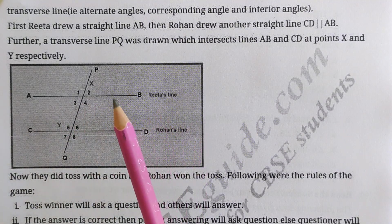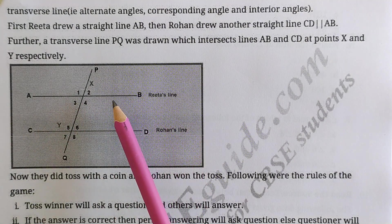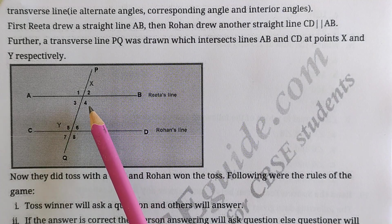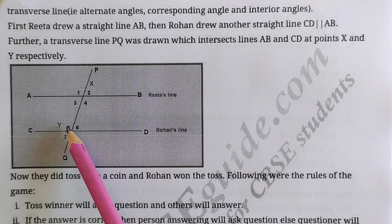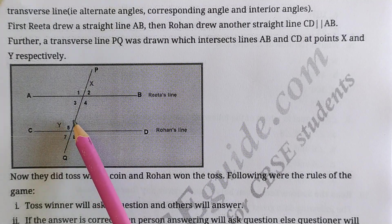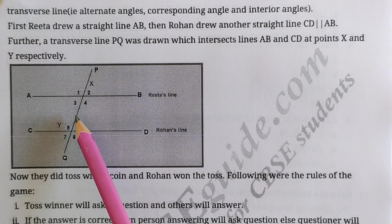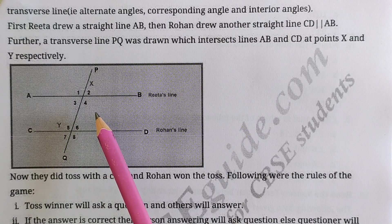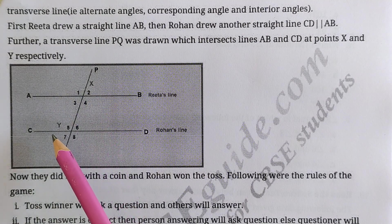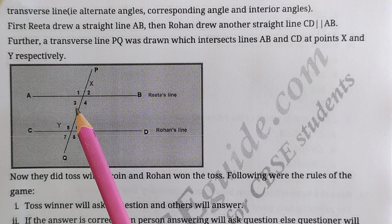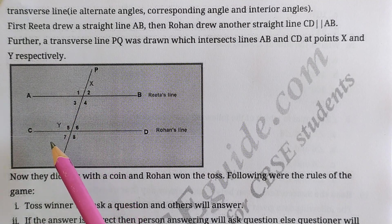Now, what are alternate interior angles? They will be inside (interior). The alternate of angle 4 is angle 5 — both are equal because these are alternate interior angles. The alternate interior of angle 3 is angle 6. For exterior angles: the alternate exterior of angle 2 is angle 7, and the alternate exterior of angle 1 is angle 8. So angle 2 equals angle 7, and angle 1 equals angle 8.